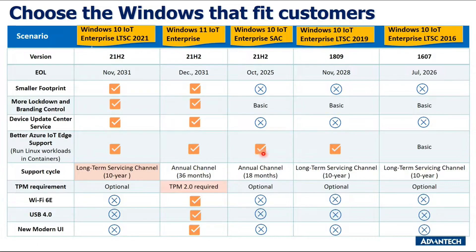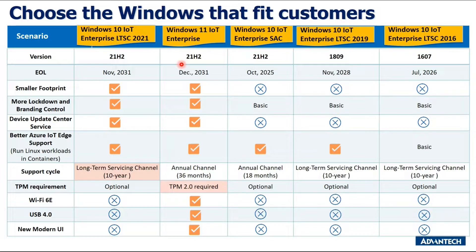The EOL dates for Windows IoT Enterprise LTSC are around 10 years from the launch date. For example, Windows 10 IoT Enterprise LTSC 2021 was launched last year with an EOL date of November 2031, and Windows 11 IoT Enterprise is December 2031. Windows IoT Enterprise LTSC 2021 has more features compared to other versions — for example, compared to LTSC 2019 and 2016, it has a smaller footprint, more lockdown and branding control, device update center service, and better agile IoT edge support.